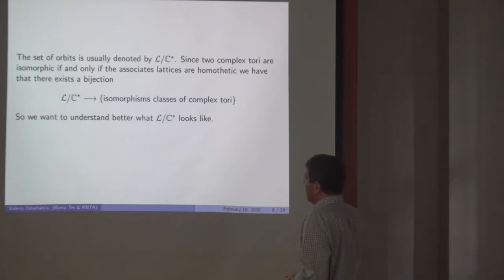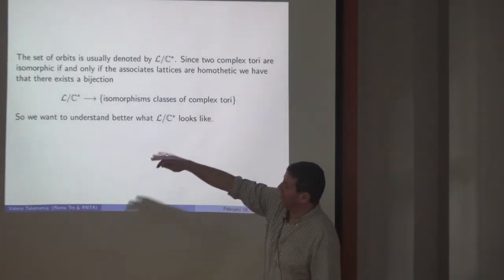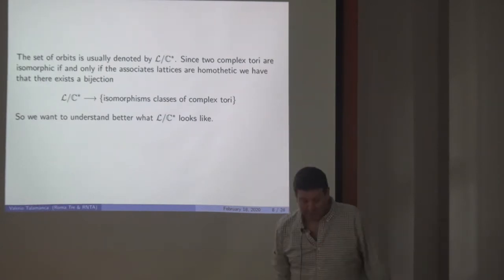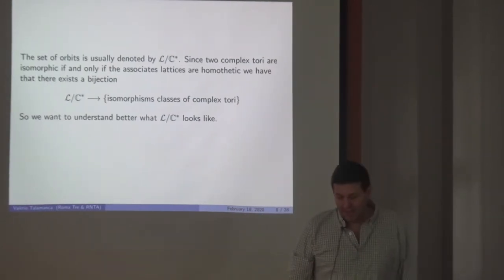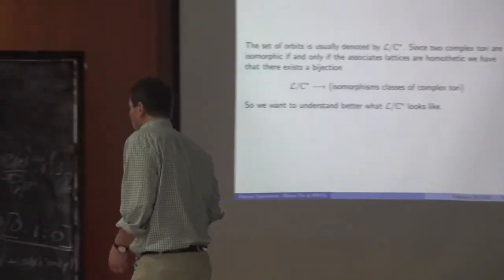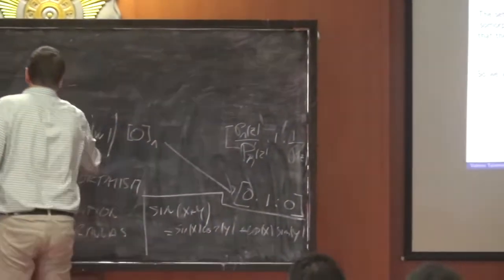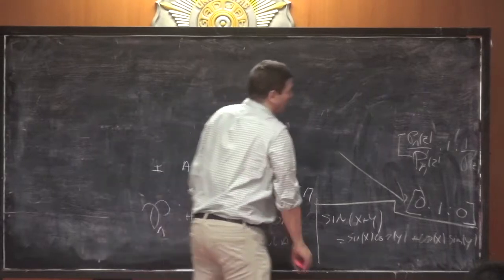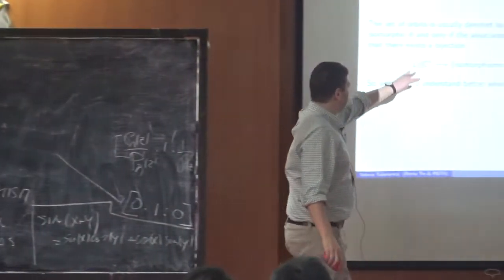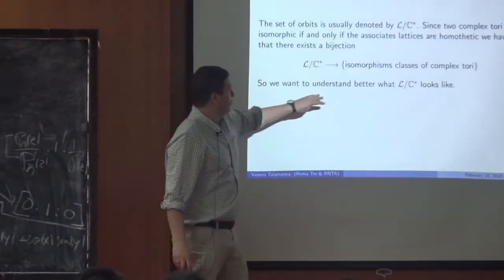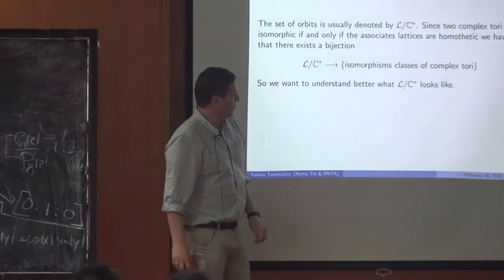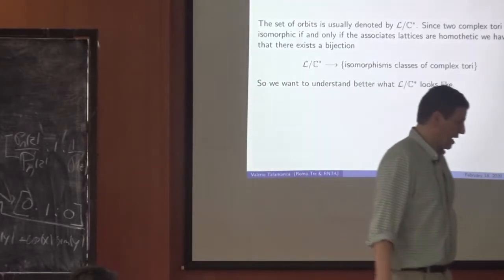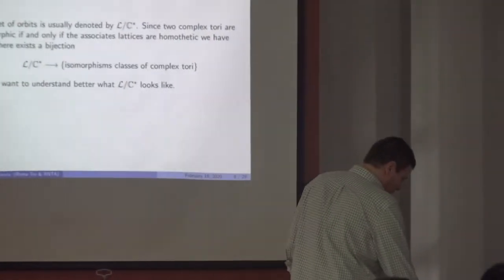Two complex tori are isomorphic if and only if the associated lattices are homothetic, so we have a bijection between script Λ / C* and the isomorphism classes of elliptic curves. Since this is an interesting object, we would like to understand what this quotient looks like — and that's what we are going to do from now on.